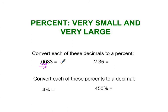Moving the decimal point two spots to the right, so the answer is .83 percent. That's less than one percent. Here, I'm moving this one over two spots to the right, so the answer is 235 percent.